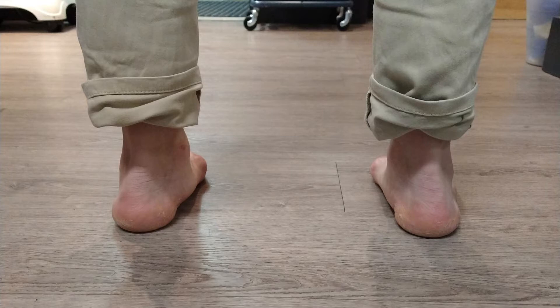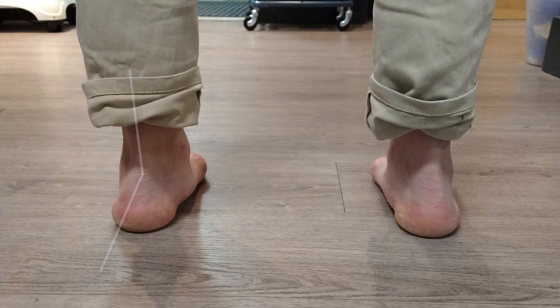Looking at his feet from behind, we notice pes cavus or flat feet. His left heel or calcaneus is more valgus or rolling in. One thing that springs to mind when seeing this is that he may have a leg length difference, with his left leg being longer than his right. The longer leg will try to compensate by pronating or rolling in more to effectively shorten that leg.